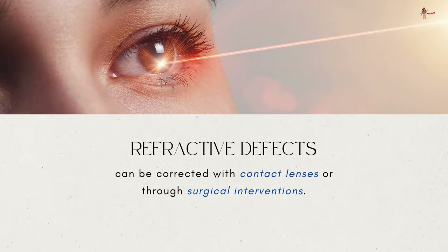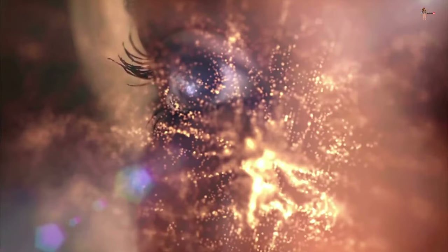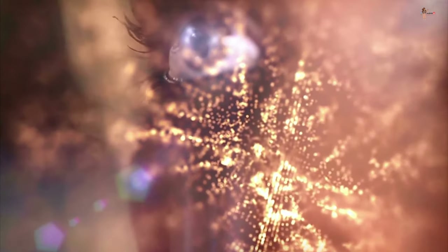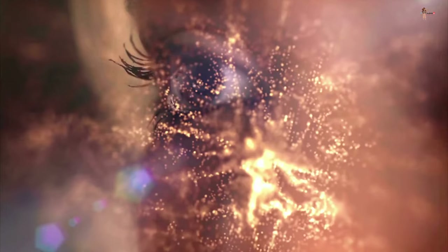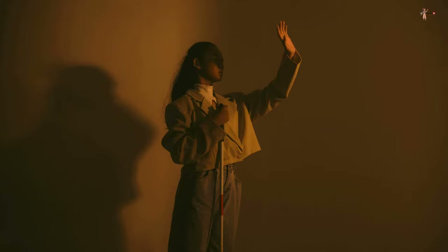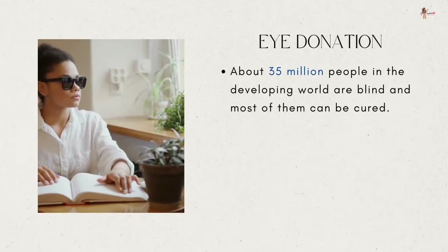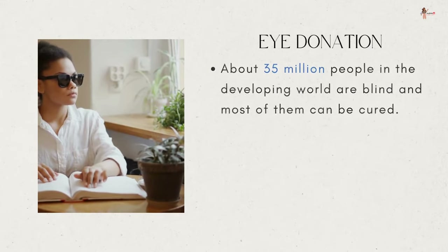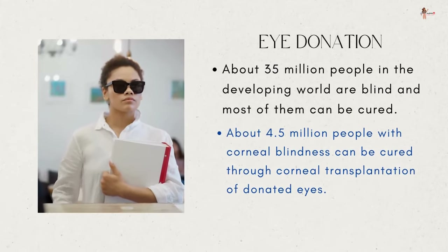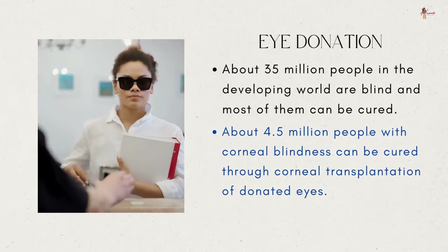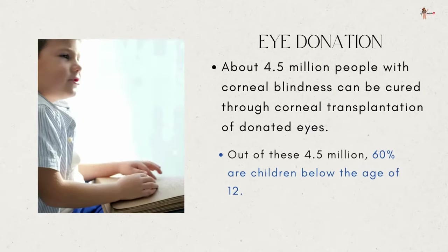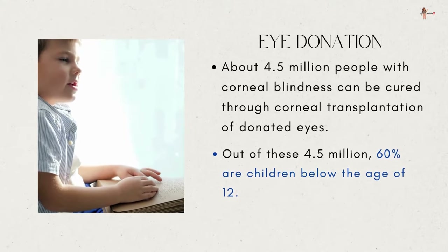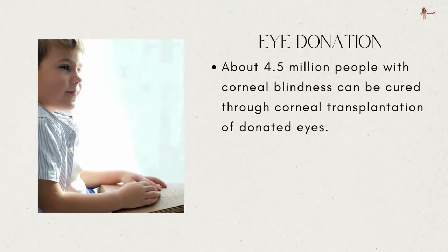These days it is possible to correct refractive defects with contact lenses or through surgical interventions. Our eyes can live even after our death — by donating our eyes after we die, we can light the life of a blind person. About 35 million people in the developing world are blind, and most of them can be cured. About 4.5 million people with corneal blindness can be cured through corneal transplantation of donated eyes.